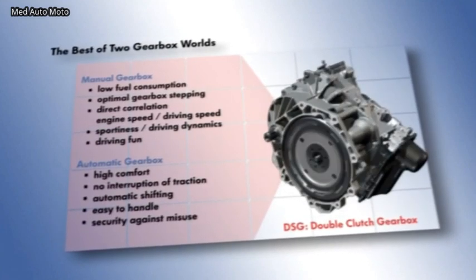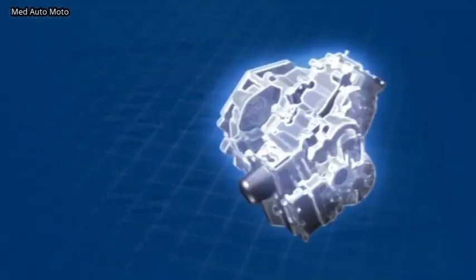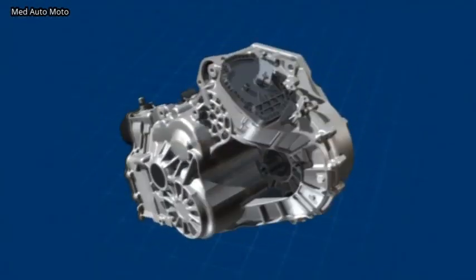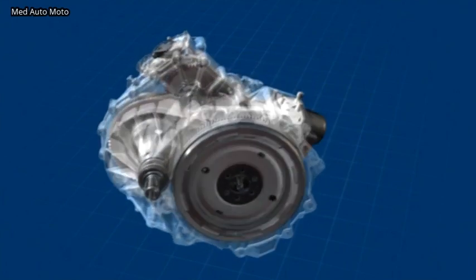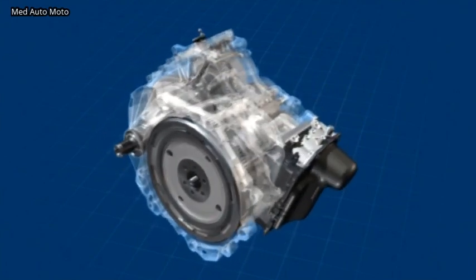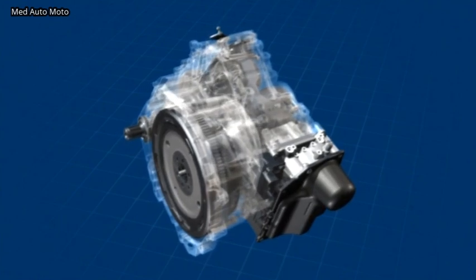Since 2003, Volkswagen combines the best of these two gearbox worlds with the dual-clutch gearbox DSG. The newest development of these automatic gearboxes, the innovative 7-speed DSG, offers driving pleasure and comfort and lower consumption figures than manual gearboxes.